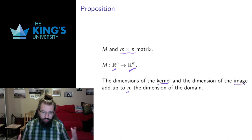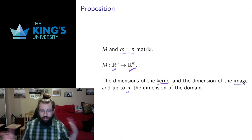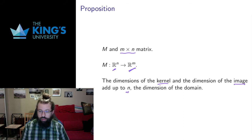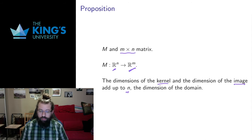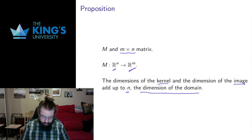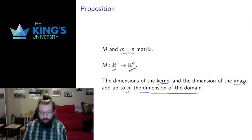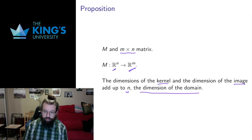A matrix can collapse dimensions — projections do this. It can collapse some number of dimensions and leave some other dimensions intact. How many dimensions get collapsed is the dimension of the kernel; how many dimensions get preserved is the dimension of the image. So it makes sense those must add up to the dimension of the starting domain. But I want to give you a more formal argument using the definitions of kernel and image that we have so far.